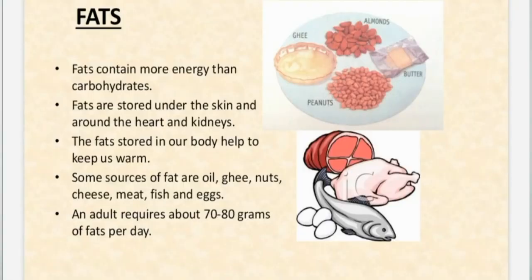Now we will learn about fats. Fats are stored under the skin and around the heart and the kidneys. There are different kinds of fats. The fats stored in our body help us to keep warm. Fats actually contain more energy than carbohydrates, and fats can be obtained from both plants and animals.